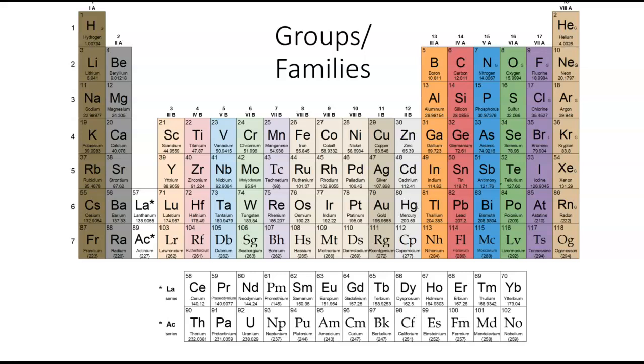The advantage of the Roman numeral system, even if the numbers are super weird, is that the A and B designations are really useful. Everything in an A group can be called a main group or representative element. Everything in a B group is a transition metal. When we talk about the periodic properties and their trends, we're going to focus on our representative elements.